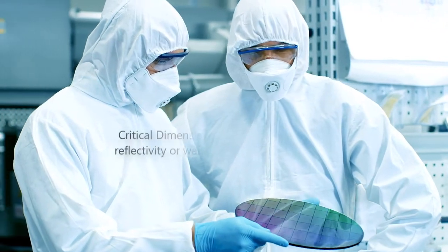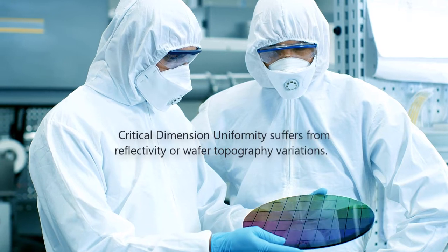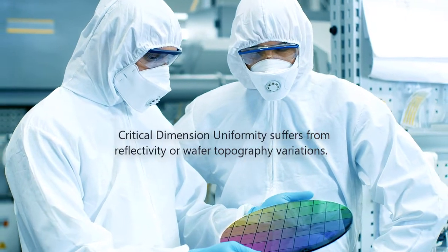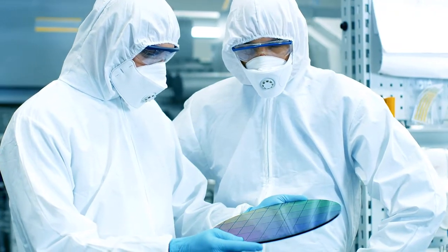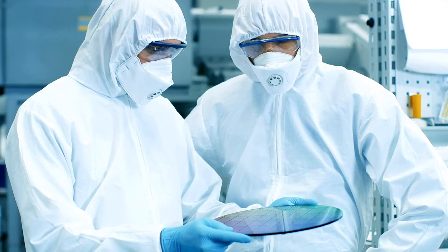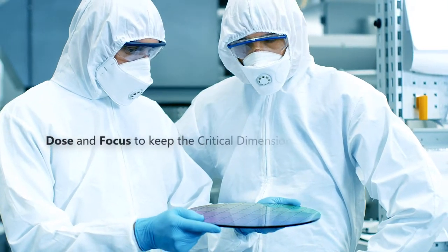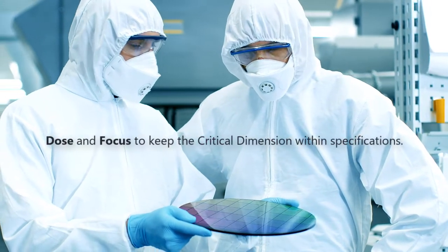Critical dimension uniformity suffers from reflectivity or wafer topography variations across the wafer. This requires a certain process margin per dose and focus to keep the critical dimension, despite those variations, within specifications.